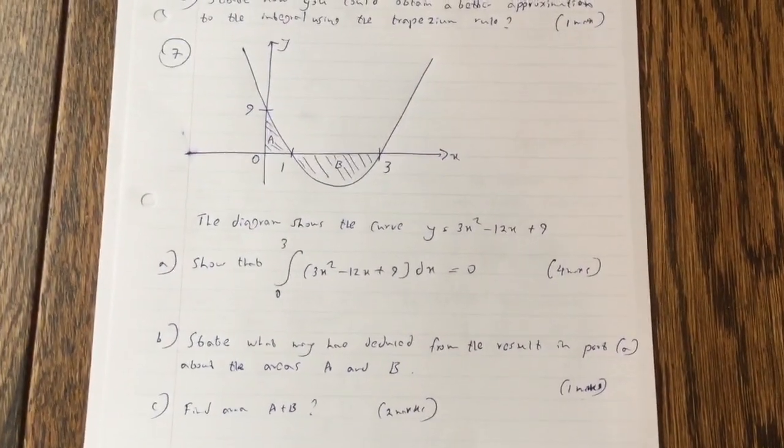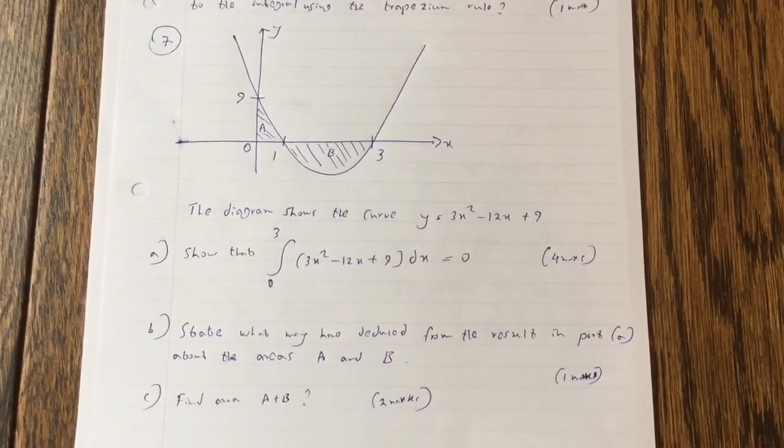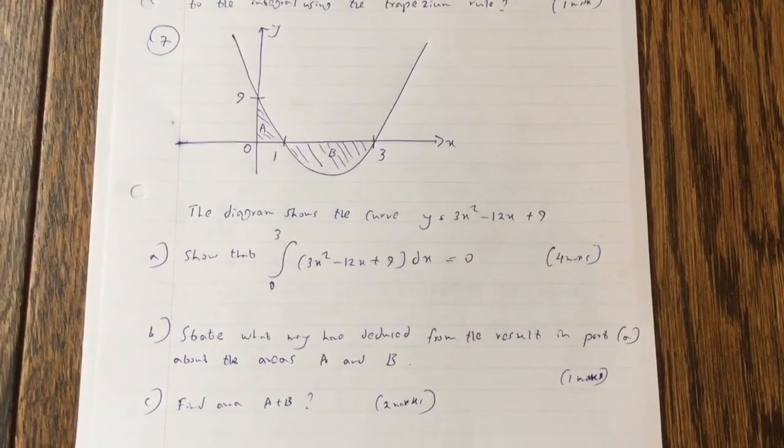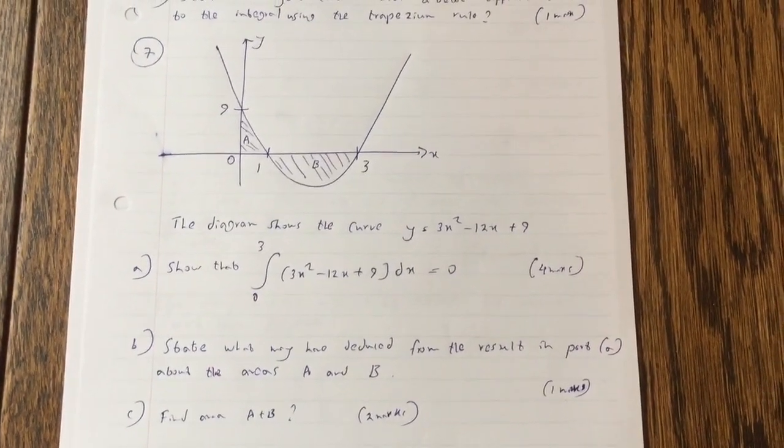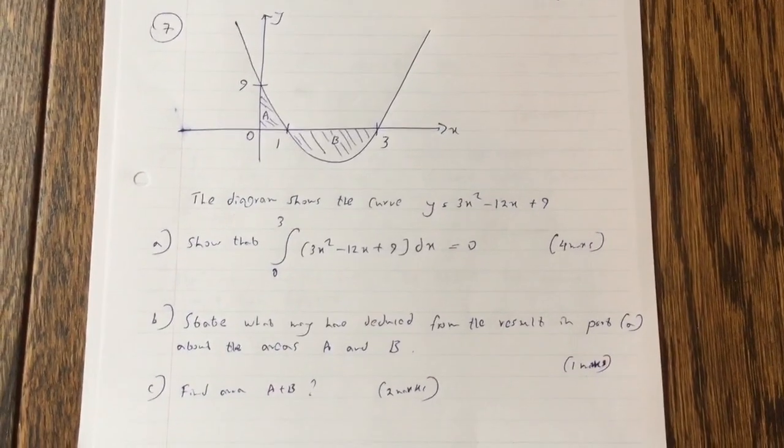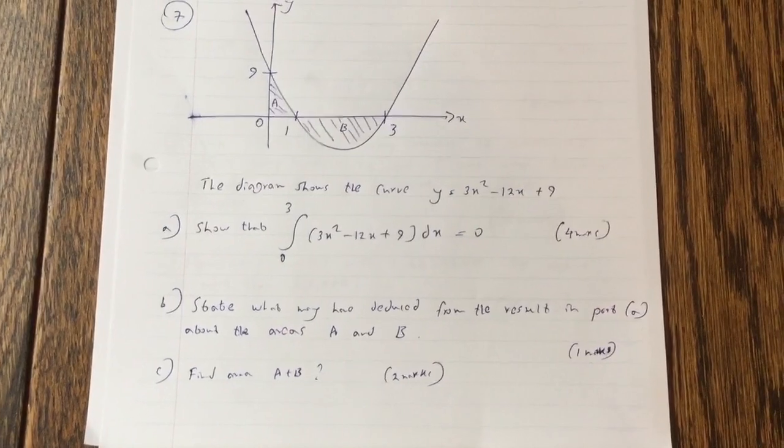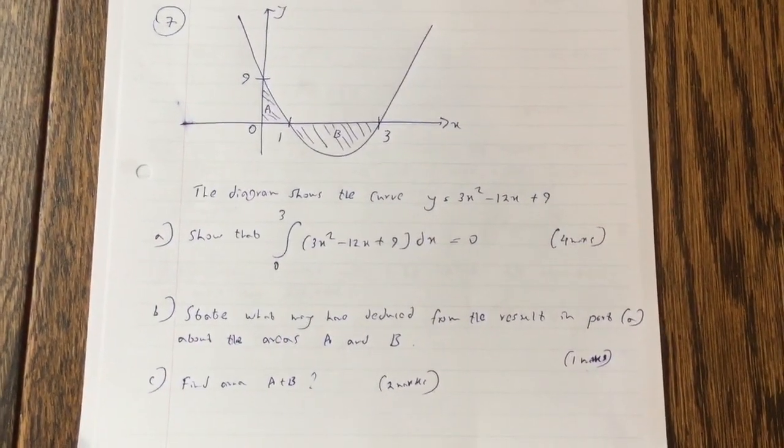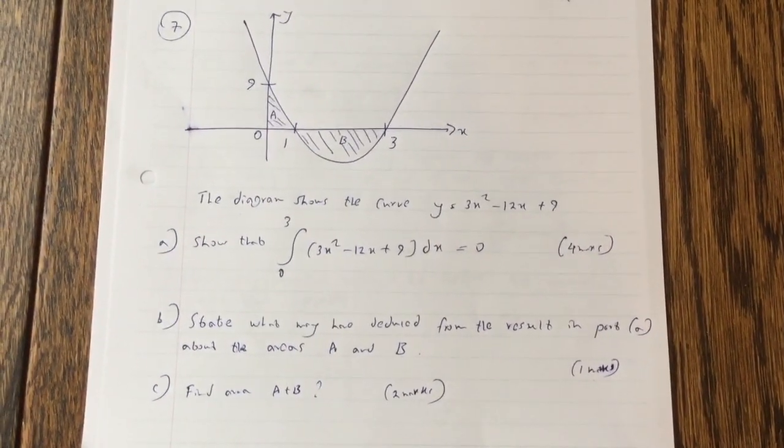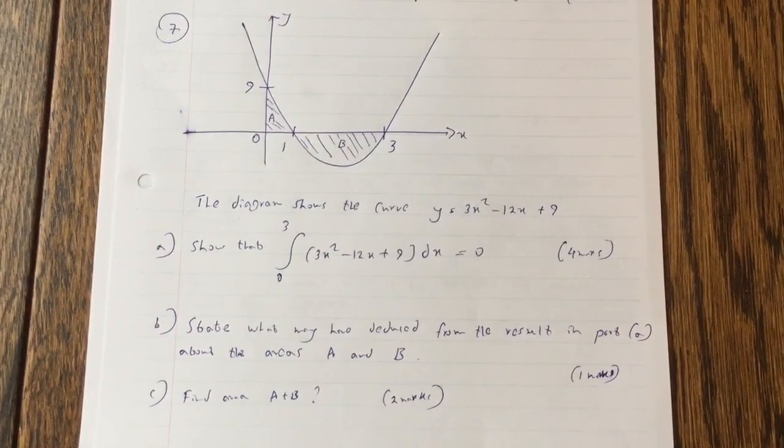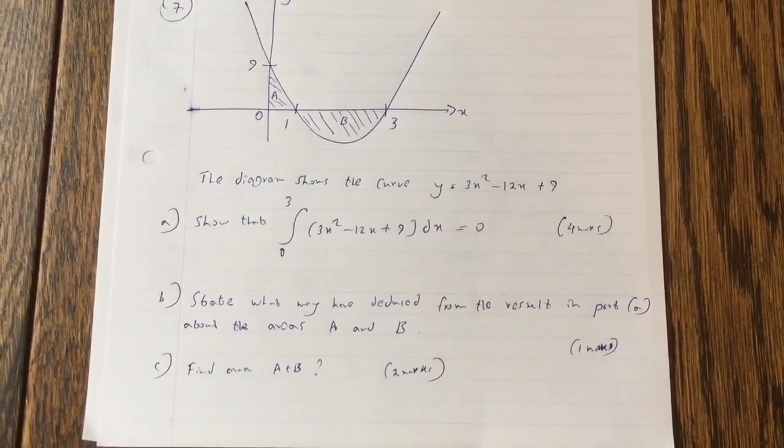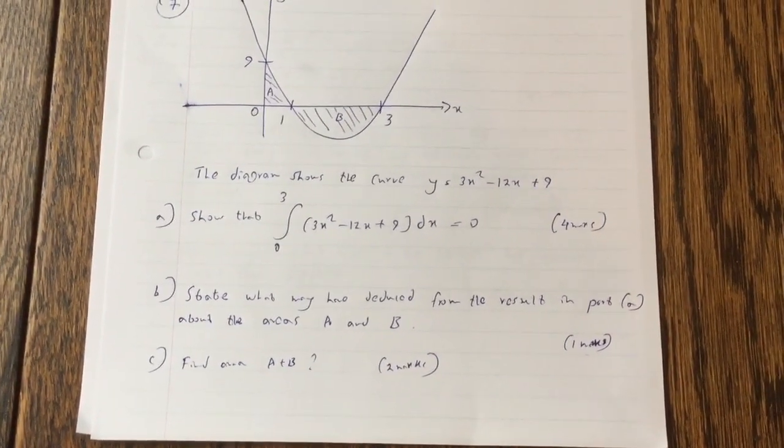The diagram shows the curve y equals 3x squared minus 12x plus 9. Show that integral from 0 to 3, 3x squared minus 12x plus 9 dx equals 0. State what may have deduced from the result in part A about the areas A and B. Find area A plus B.